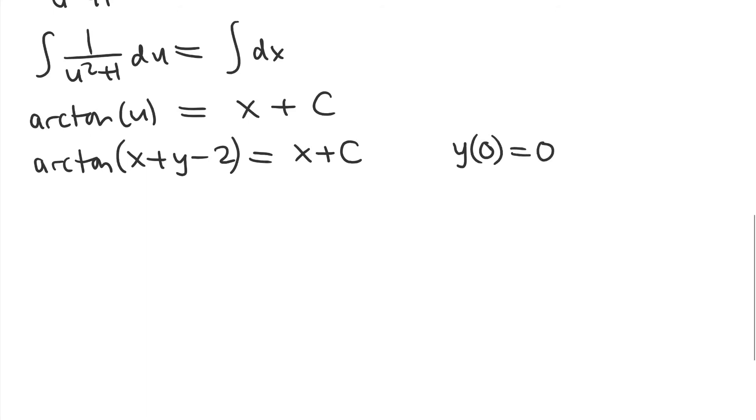So if I plug in x = 0 and y = 0, I get arctan(-2) on the left-hand side and just C on the right-hand side. So I've solved for my constant, which means our particular solution is arctan(x + y - 2) = x + arctan(-2).